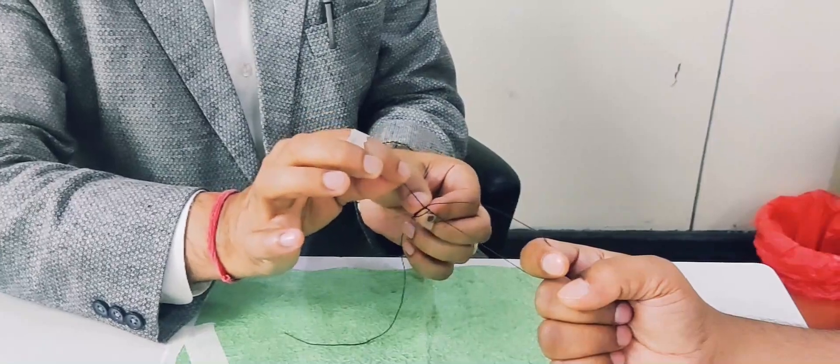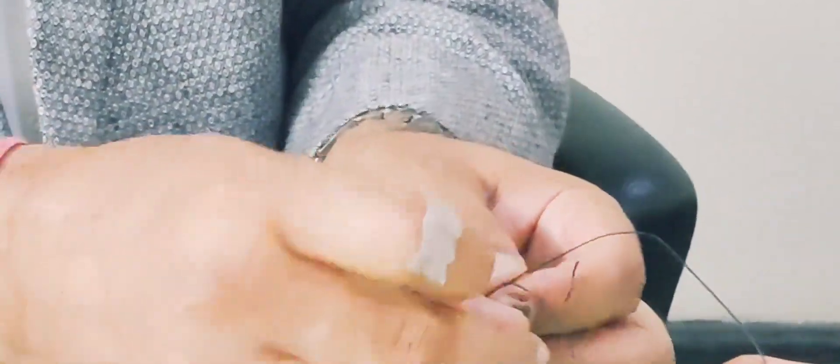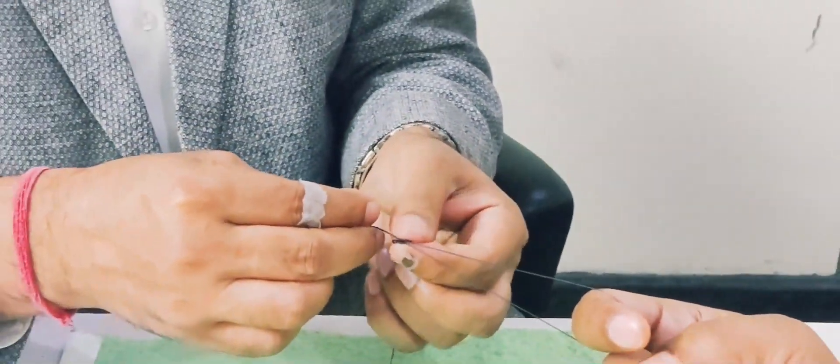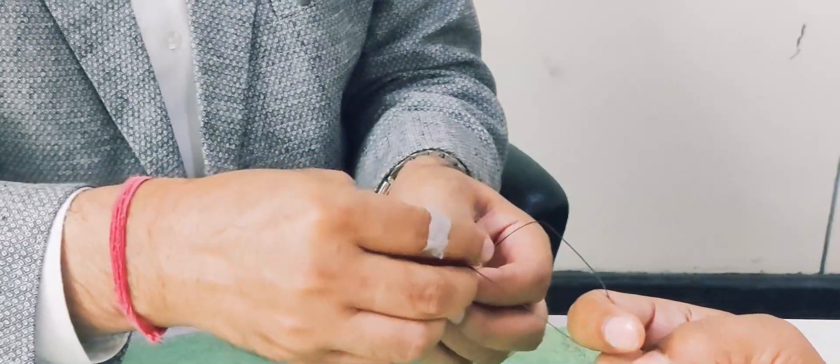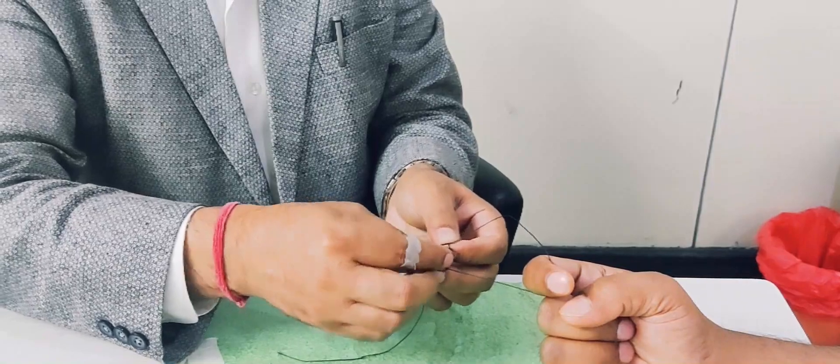After this half knot you will do the one full loop. After this, there will be a half knot. Like this. This is the half knot.